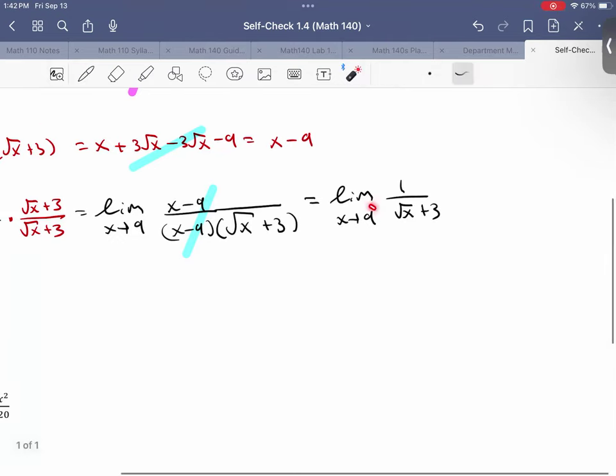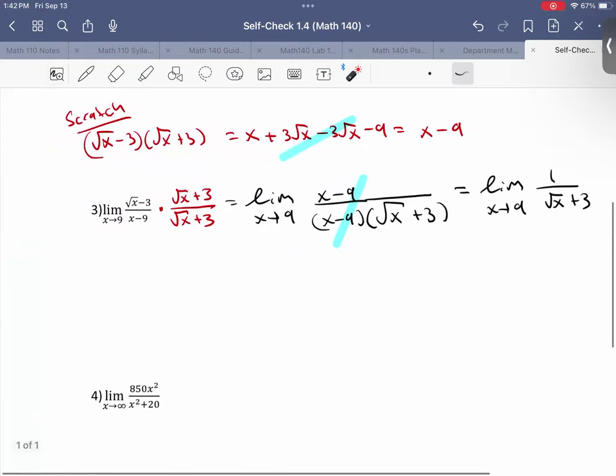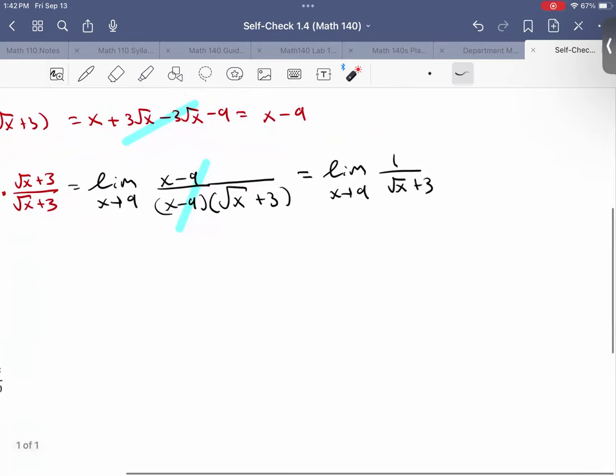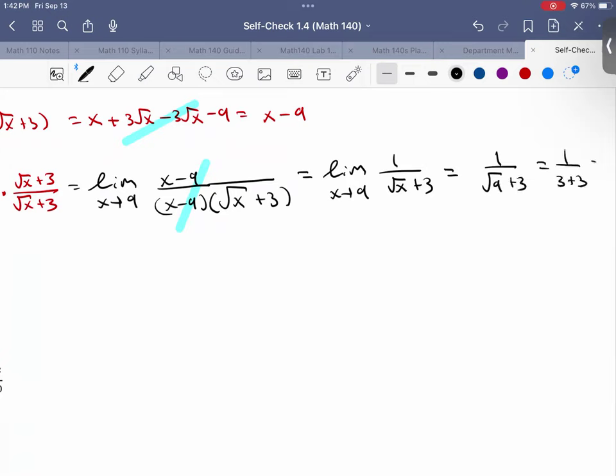What you're left with is limit as x approaches 9 of 1 over square root of x plus 3. And is it okay now for me to plug in 9? Yeah, because it's not going to blow up. I'm not going to get a 0 on the bottom, as opposed to if we plugged in 9 here, we would have got a 0. So that's why we're doing this algebraic manipulation. So now I could plug in 9, and now the limit goes away. So I get 1 over 3 plus 3, which is just 1 sixth. And that's the answer.